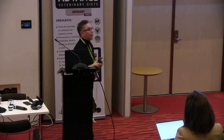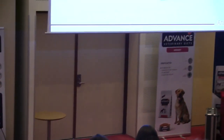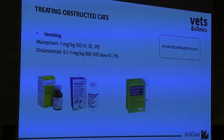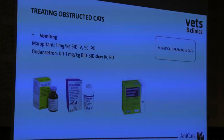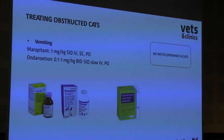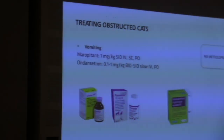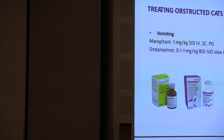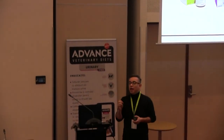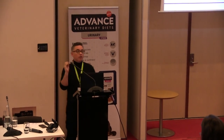We must not forget vomiting. When a cat comes as an emergency, the first thing I do when I place the IV catheter is give an antiemetic. You can use maropitant at standard doses, or ondansetron. Ondansetron is my second option. Do not use metoclopramide for vomiting in cats, because cats do not have dopamine receptors in the vomiting center.